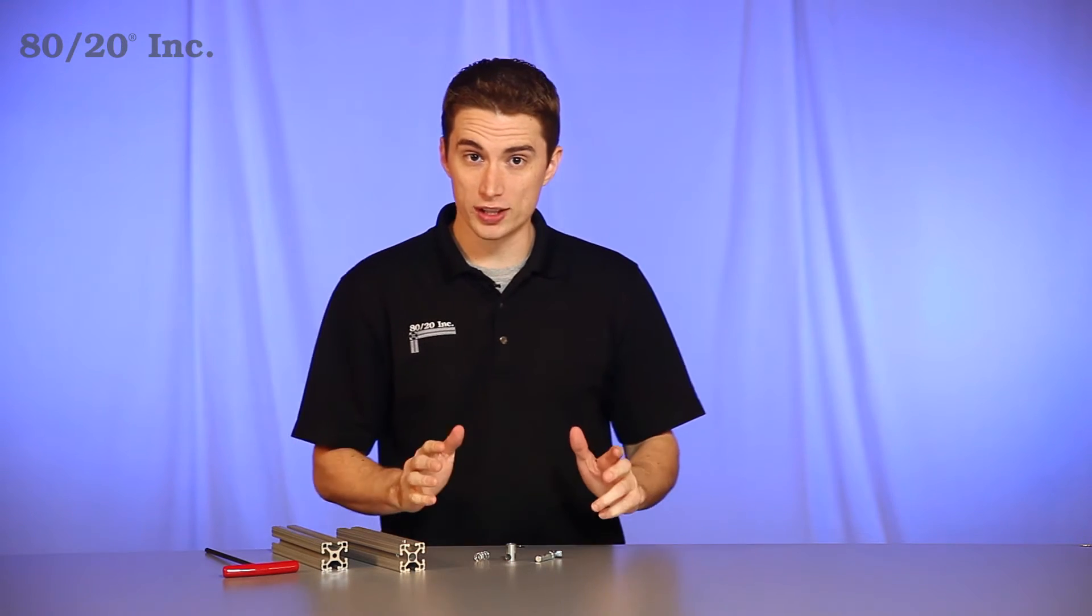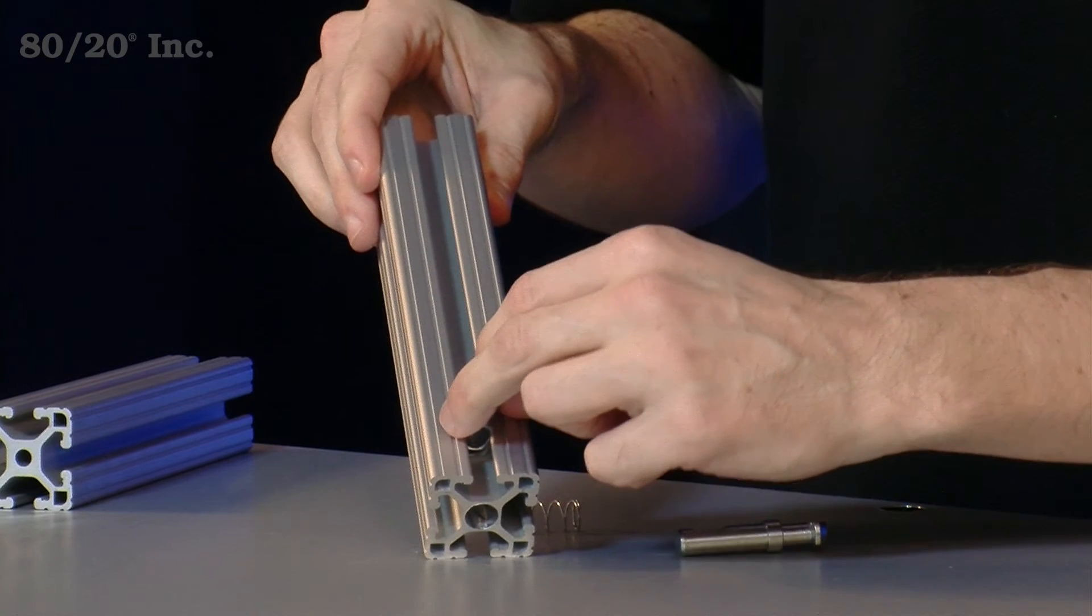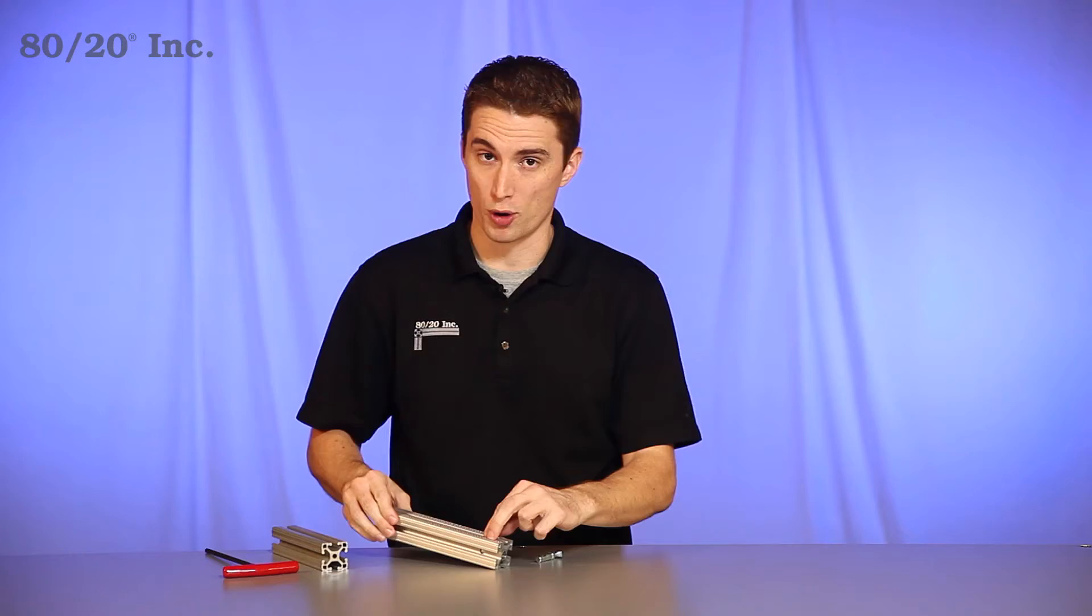Now when it comes to installing a central connector, you're going to start with your barrel and place it into the counter bore surface, making sure the hole faces out towards the end of the profile.